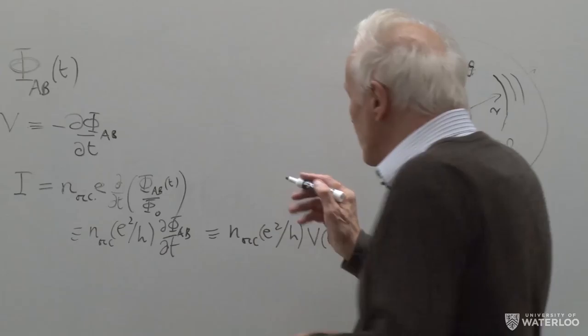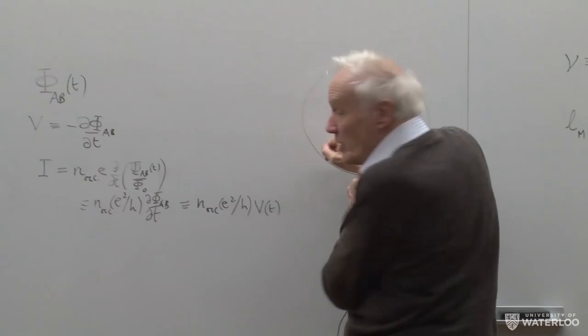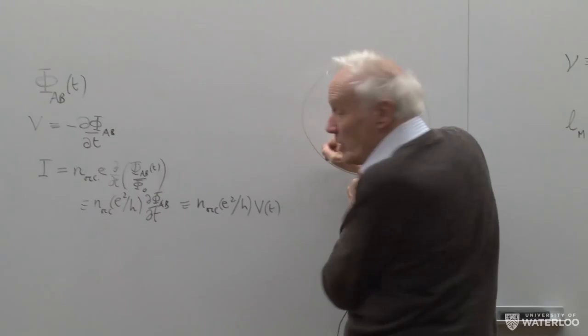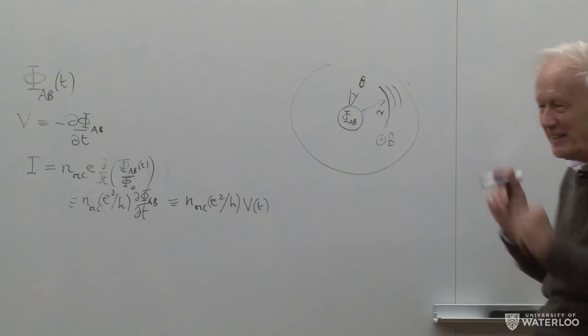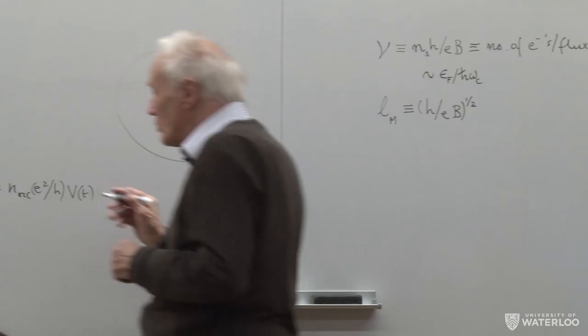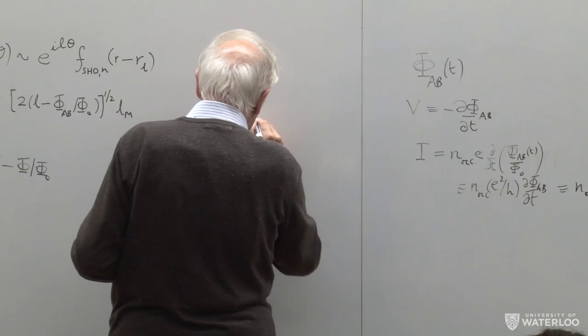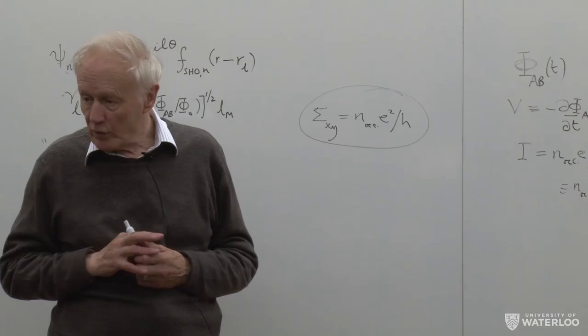The current flows one way and the voltage is around the circuit, so we're talking about the Hall conductivity σ_xy. This tells us σ_xy = N_occupied × e²/h, which is just the observed integral quantum Hall effect.